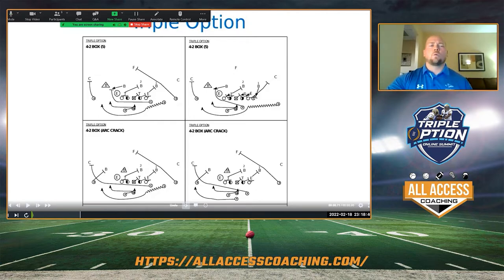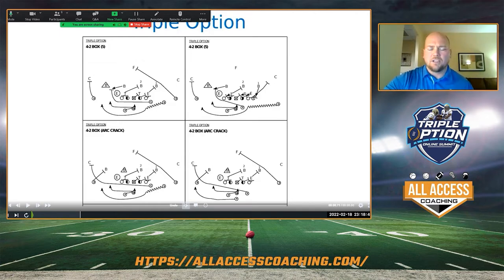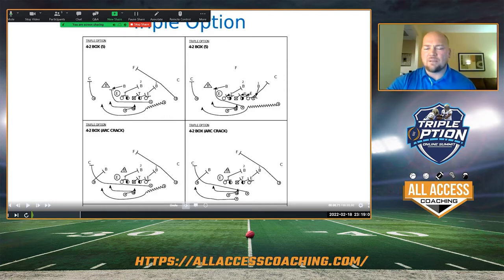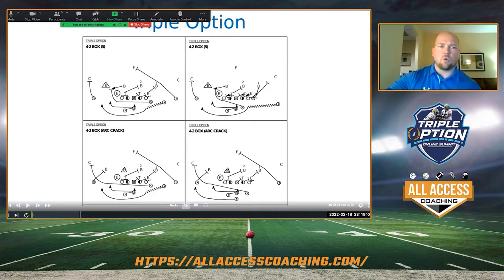When we're looking at triple option, the first thing our whole team is going to communicate is: what's the box that we're seeing? We're really worried about three boxes — a 4-2 box, a 4-1 box, a 3-2 box. And more teams are kind of showing some double-eagle, 3-3 stack type stuff, which I think there's merit to developing some rules for, and as we've seen it more we've translated into some more rules.